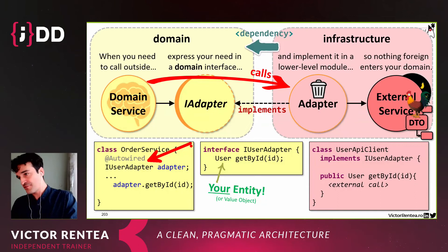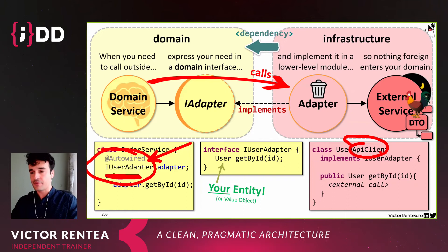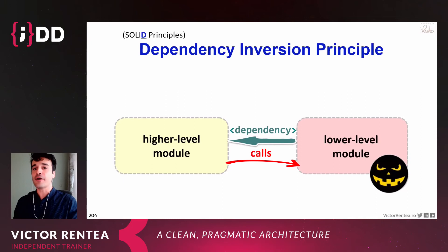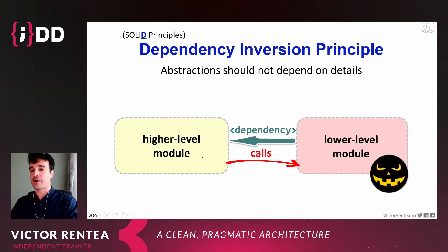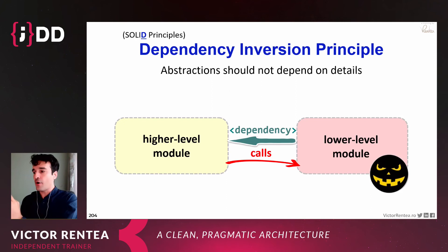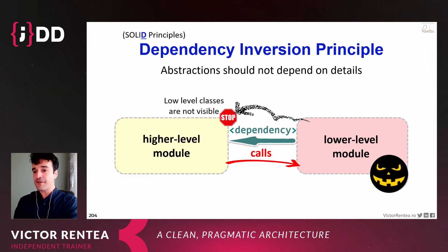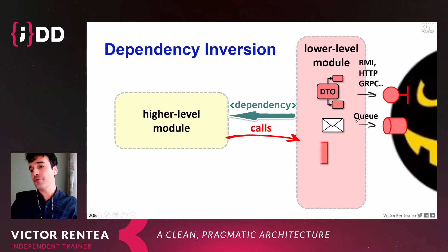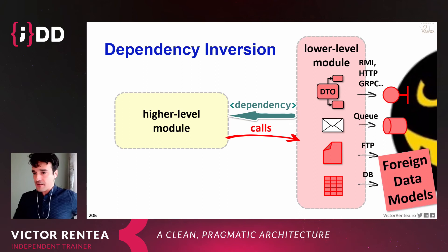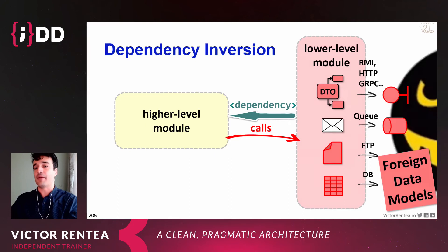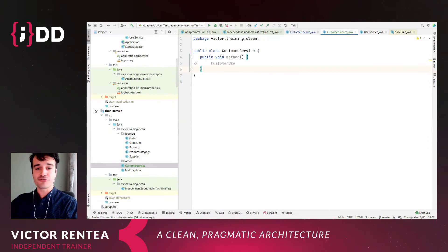We call it dependency inversion because even though the domain doesn't depend on infrastructure, we can still call the adapter at runtime because Spring or whatever dependency injection container you use is smart enough to inject the right implementation. This is the Dependency Inversion Principle — the D in SOLID: keep your high-level policy independent of low-level details. Abstractions should not depend on details. The domain should not depend on external agencies or other microservices, which effectively stops any external data structure from entering your domain.